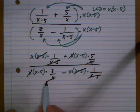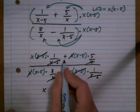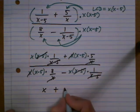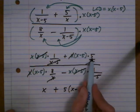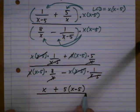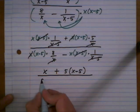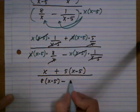So let's write what we have left over. We have x plus 5 times x minus 5, and it's really important to keep the parentheses around the x minus 5, so that the 5 is multiplying the entire x minus 5 and not just the first term of it. And that's all over 8 times parentheses x minus 5 minus x.